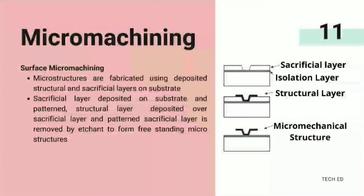Surface micromachining: microstructures are fabricated using deposited structural and sacrificial layers on a substrate. The steps can be summarized as: a sacrificial layer is deposited on the substrate and patterned, then a structural layer is deposited over the sacrificial layer and patterned. The sacrificial layer is removed by etchant to form free-standing microstructures.